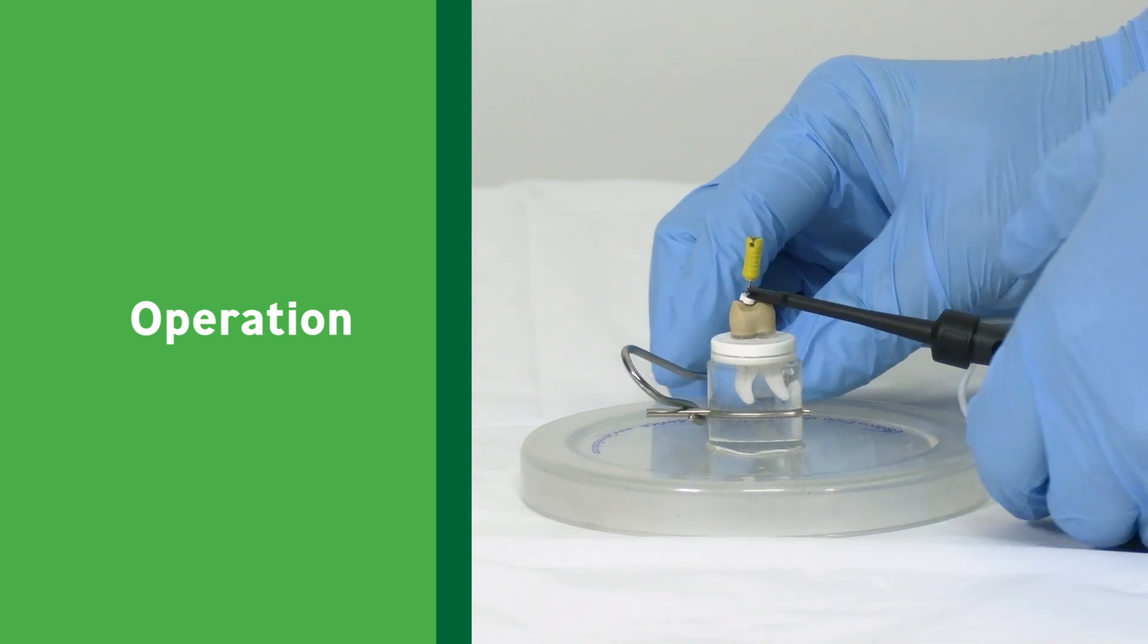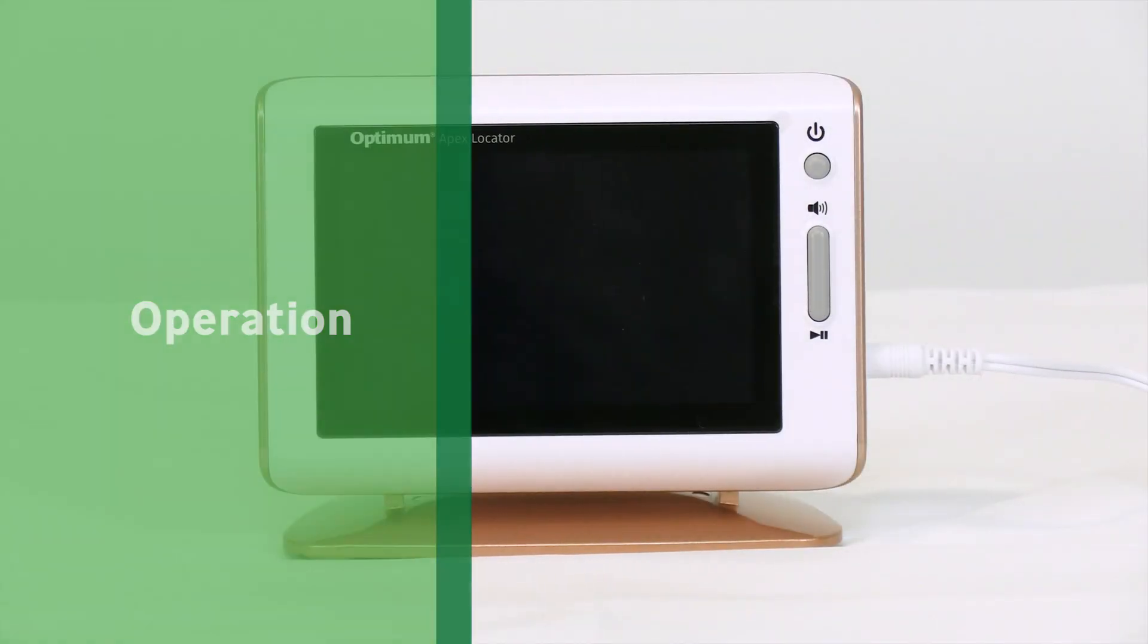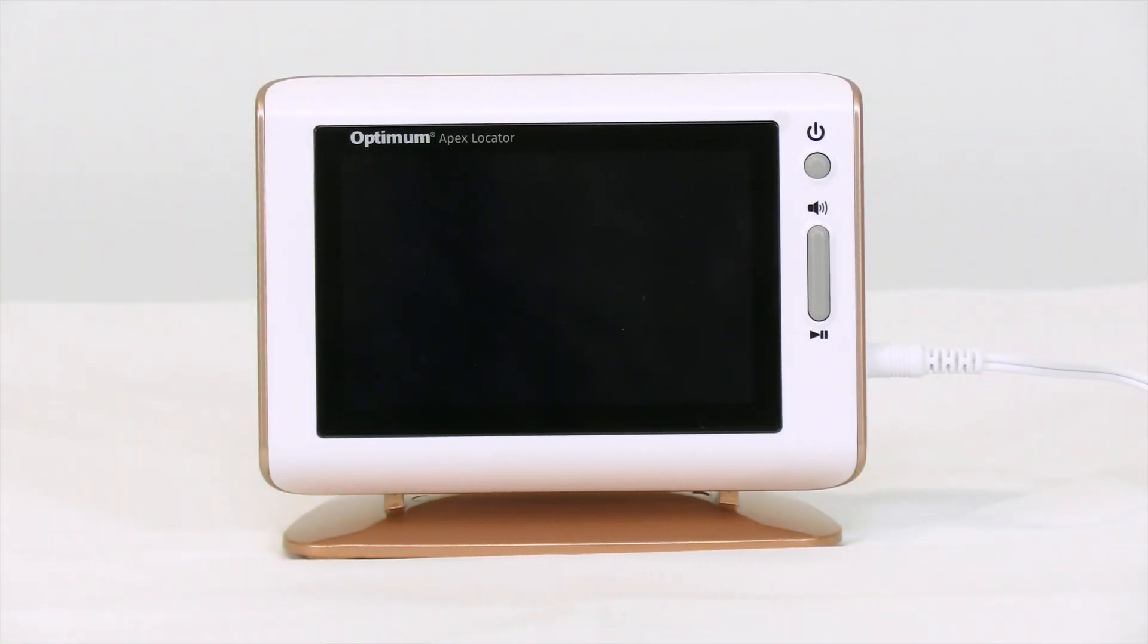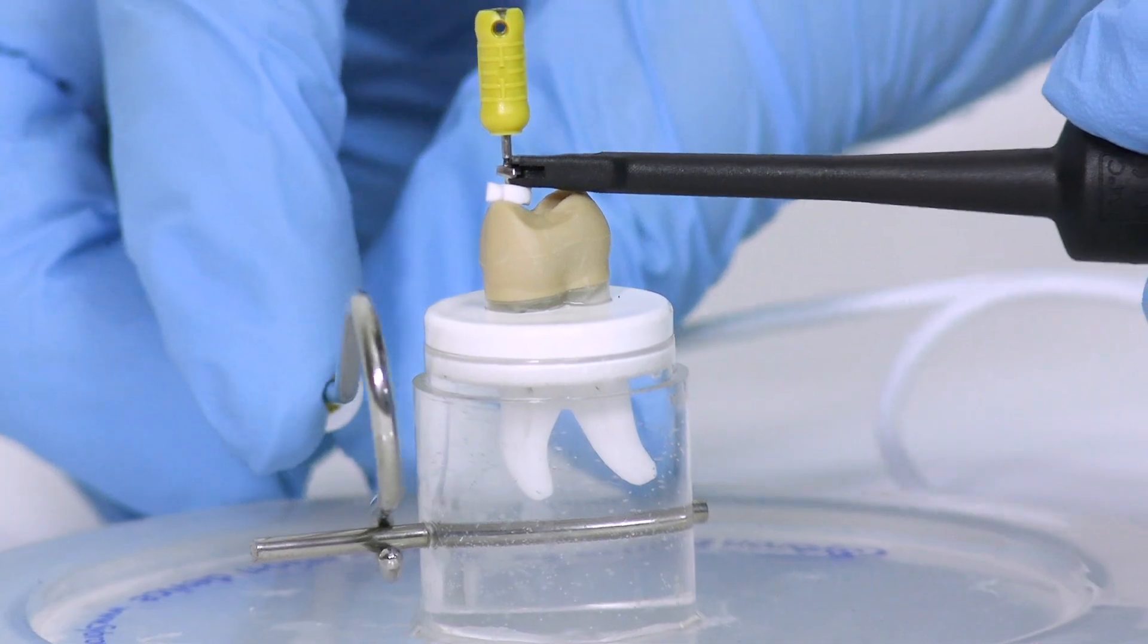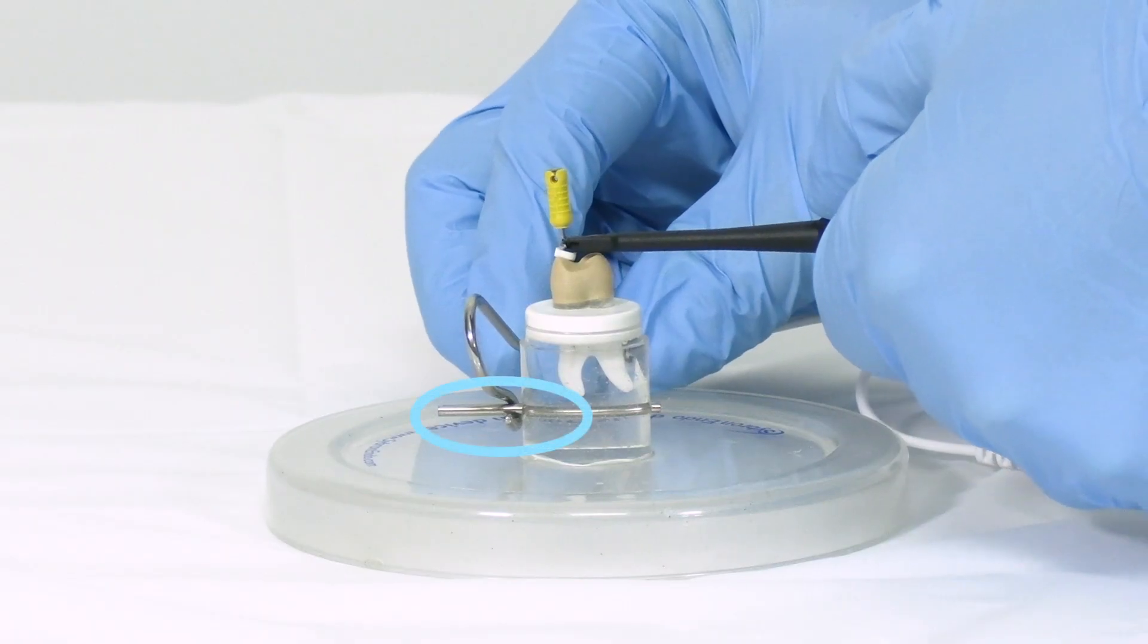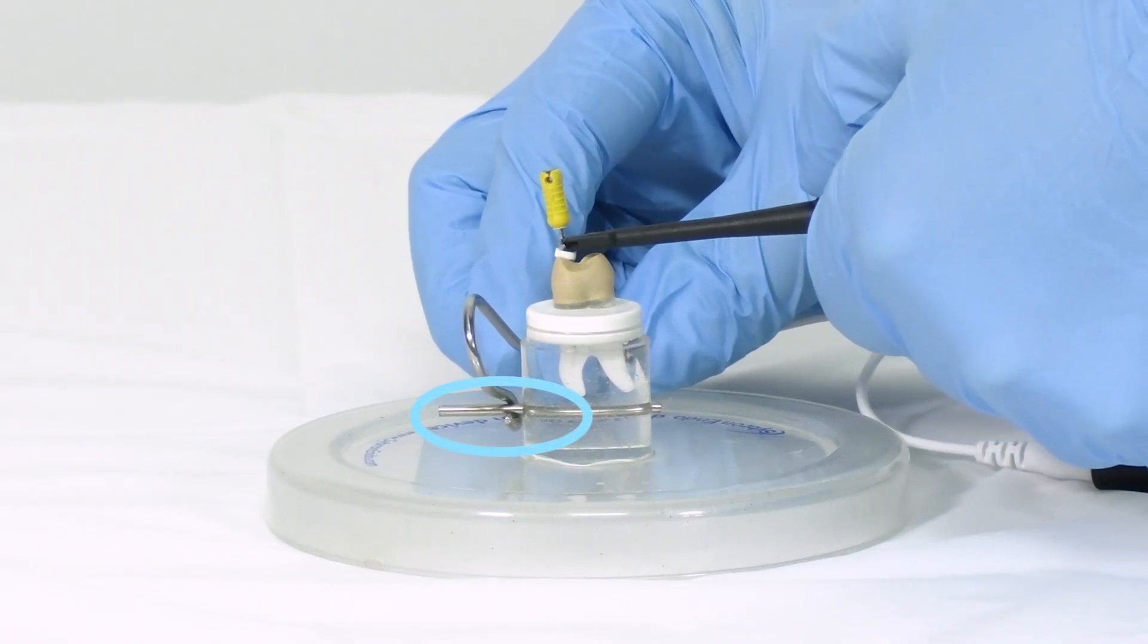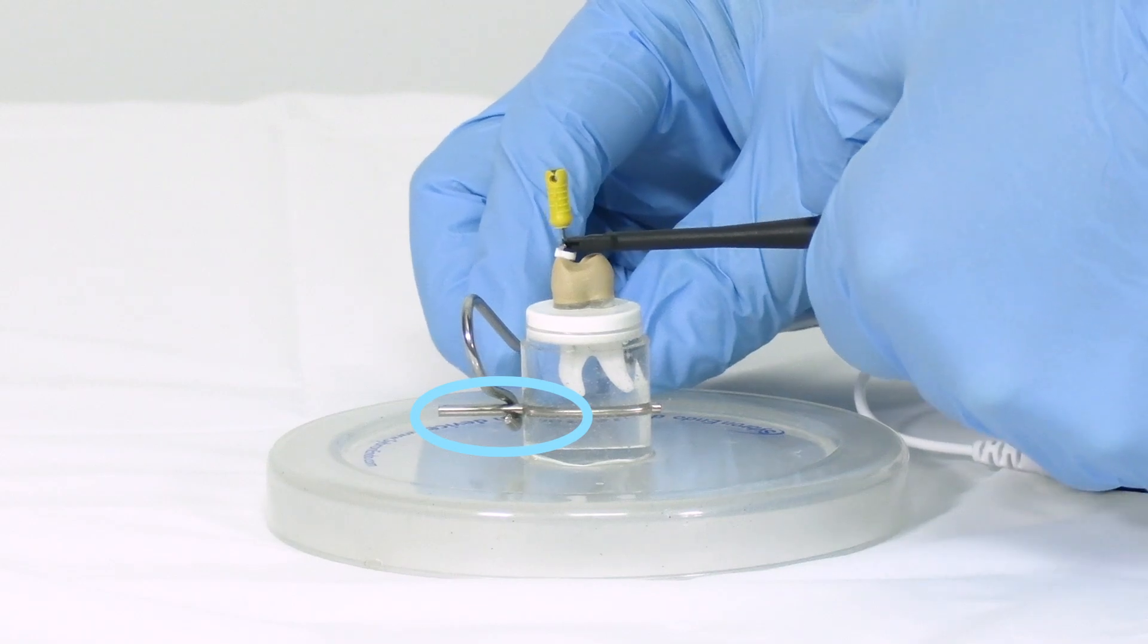Operation. Once the device is properly set up and ready for use, power the unit on. Hang the lip hook on the patient's lip. In this demonstration, the metal bar on the left side of the demonstration device will serve as the lip.